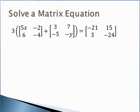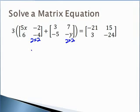Let's move on to solving a matrix equation. When we solve an equation, we're looking for the value of the variable. We have a two by two matrix with a scalar of three on the outside. Looking at corresponding elements, in the first row, first column we have 3 times the quantity 5x plus 3, and we want that to equal negative 21.